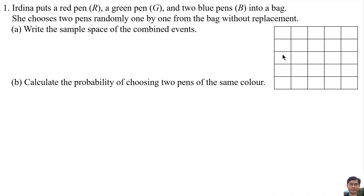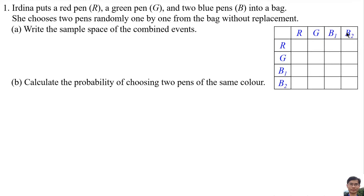These four boxes represent the first chosen pen, and these four boxes represent the second chosen pen. This is the first blue pen, this is the second blue pen, this is the first blue pen, second blue pen.